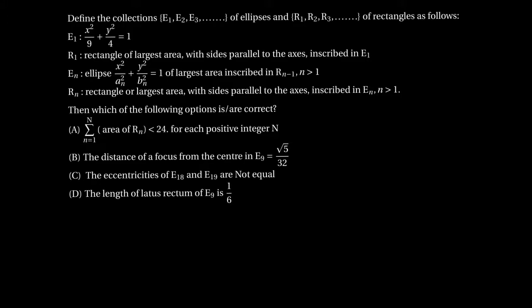Define the collections: set of all ellipses E1, E2, E3... and rectangles R1, R2, R3... as follows. E1 is given as x²/9 + y²/4 = 1. R1 is the rectangle of largest area with sides parallel to the axes inscribed in E1. En is the ellipse x²/an² + y²/bn² = 1, and Rn is the rectangle of largest area with sides parallel to the axes inscribed in En, for n > 1. Which of the following options are correct?